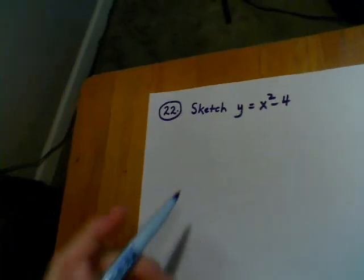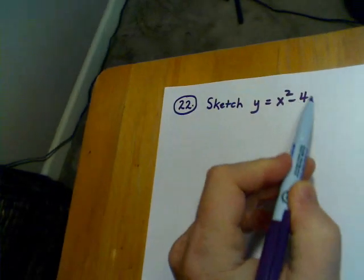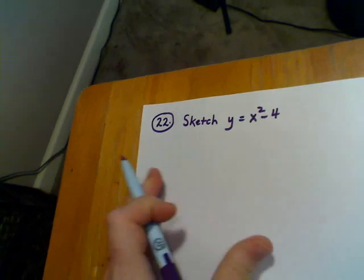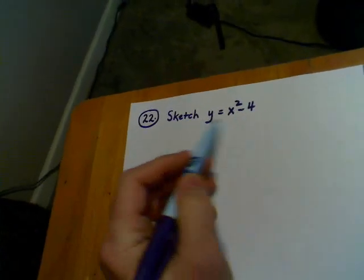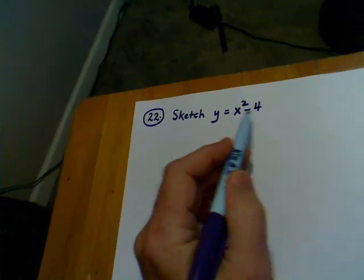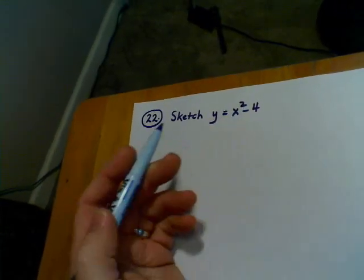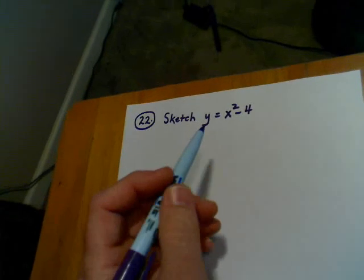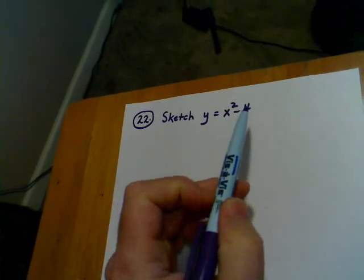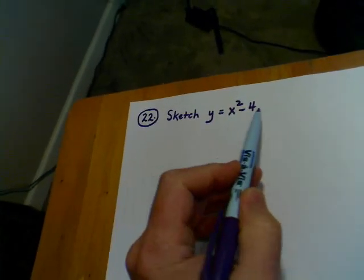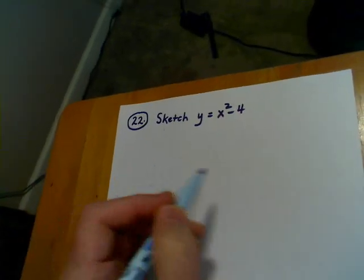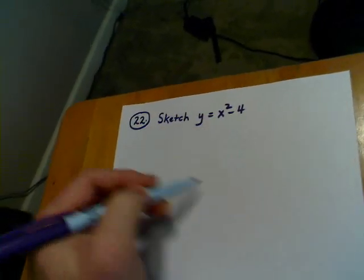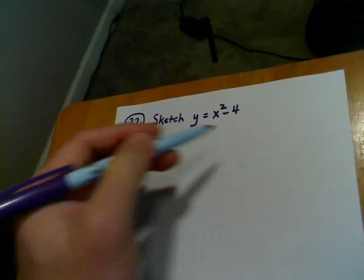The first thing I want you to notice is that the degree of this function is 2, which immediately means this is not a linear function. If it was linear, it would be in the form ax plus b, degree 1, not degree 2. When you have a function whose degree is 2, your graph is going to be a parabola, either opening up or opening down.